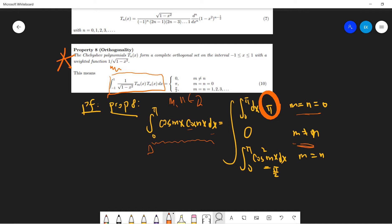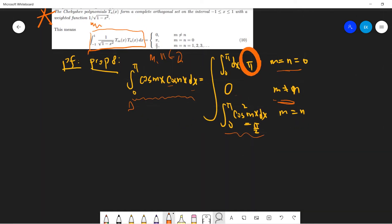If n is not the same, which is 0. And if m is n equals to n, then you get pi over 2. And finally, we just...